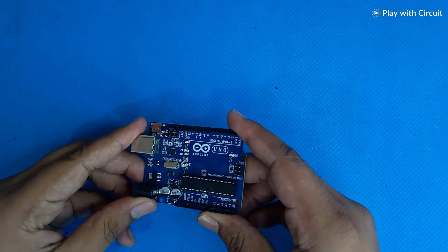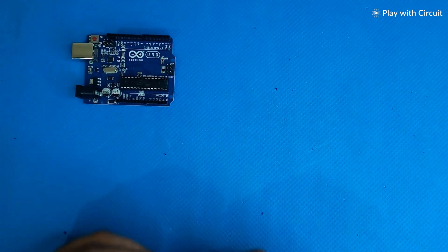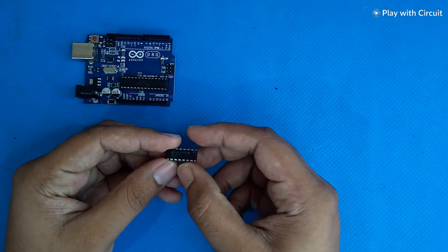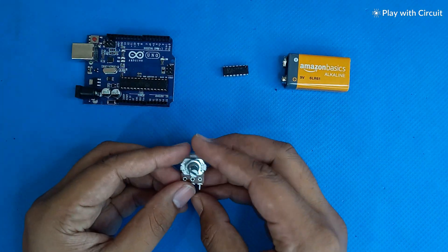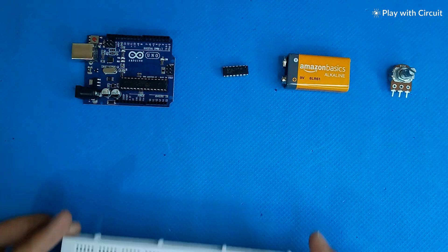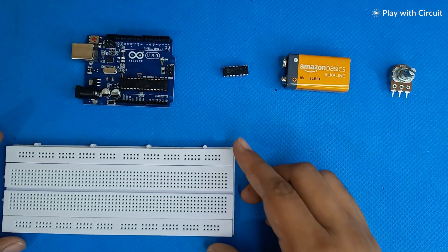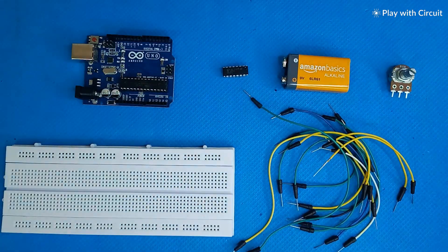To make this project you will need an Arduino UNO, an L293D motor driver IC, 9 volt battery, a potentiometer, a breadboard, some jumper wires, and 2 DC motors.